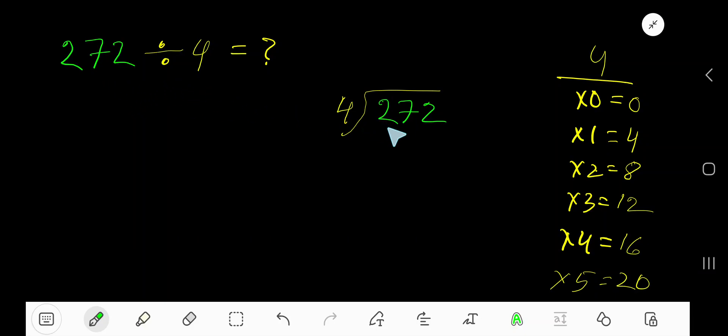272 divided by 4. Here 4 is the divisor, so we need the multiplication table of 4. 4 times 0 is 0, 4 times 1 is 4, 4 times 2 is 8, 4 times 3 is 12, 4 times 4 is 16. Just add 4 with the previous step: 0 plus 4 is 4, 4 plus 4 is 8, 8 plus 4 is 12, 12 plus 4 is 16.